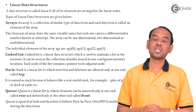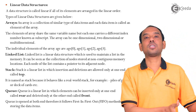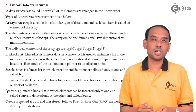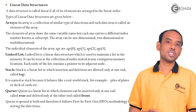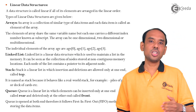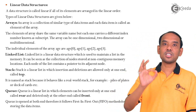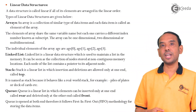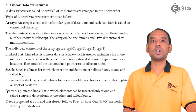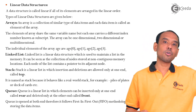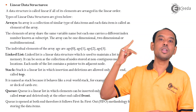Queue is just the opposite of stack. In stack we have Last In First Out, but in queue we have First In First Out — the element inserted first is the first element to come out. For example, if you are standing in a queue at a ticket counter, the first person standing is the first person to get the ticket and be removed from the queue.